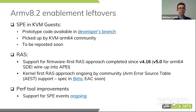Moving on to 8.2 — as I said, almost completed, there are a few leftovers. One is the statistical profiling extension, which needs to be exposed into KVM guests. There is prototype code available on a developer's branch. The activity is going to be picked up by the KVM ARM64 community and should be reposted soon on list. That will complete the SPE enablement.